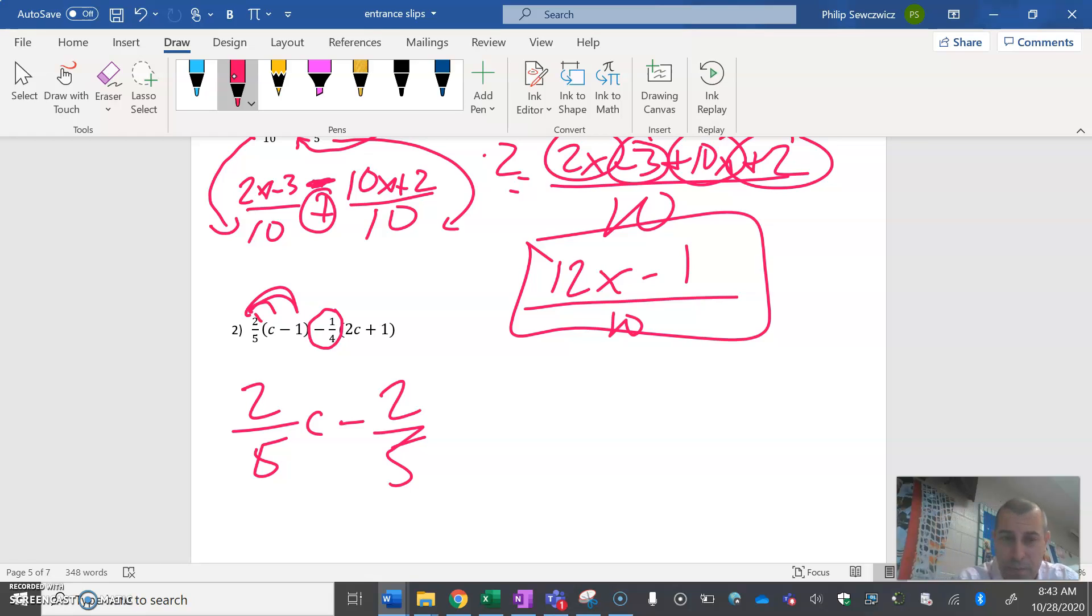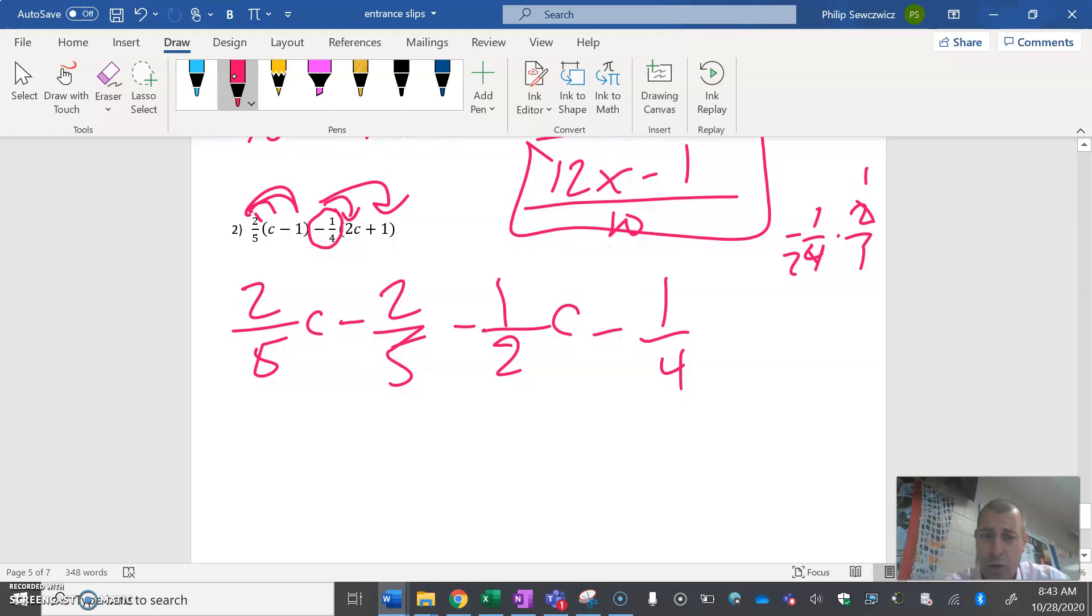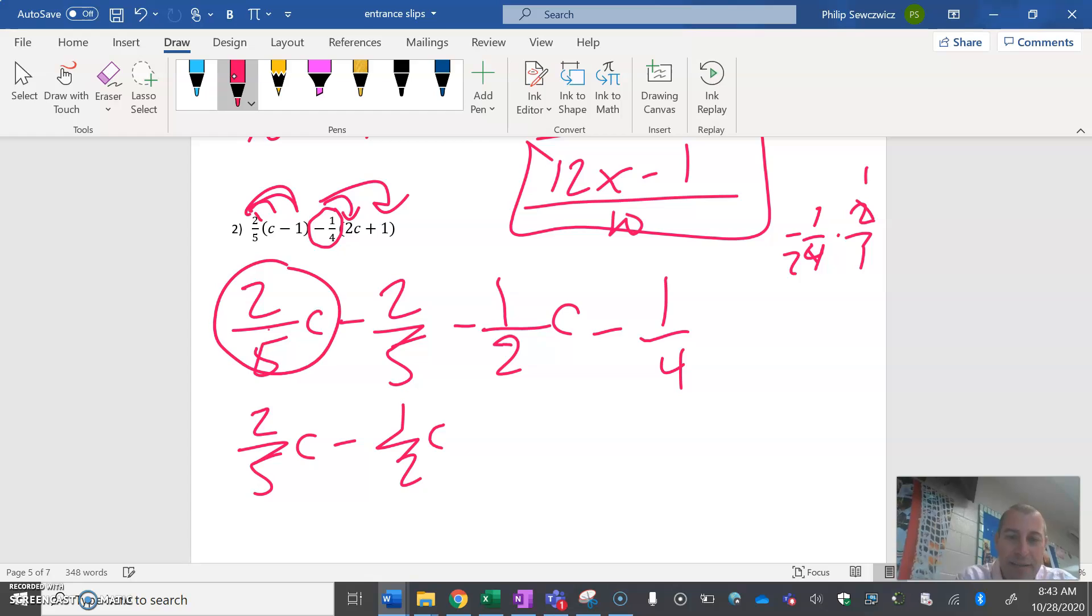I need to do negative one-fourth times two c. Taking a fourth of something is the same as dividing it by four. If you take that two and divide it by four, you actually get a half. If you don't like that, you can come off to the side and do negative one-fourth times two - you can see your cross division there. Now you can see, oh yeah, there's my negative one over two. Multiply it times c.